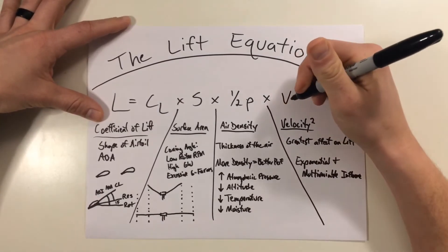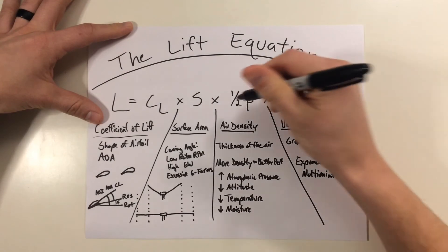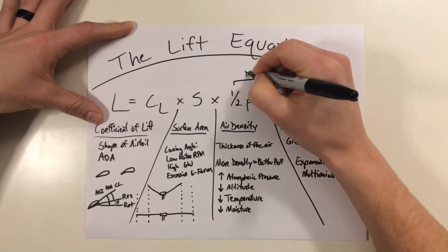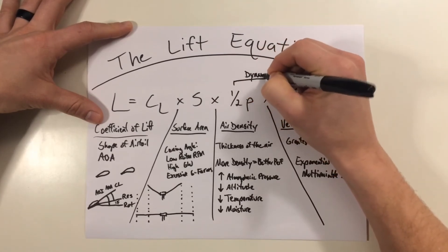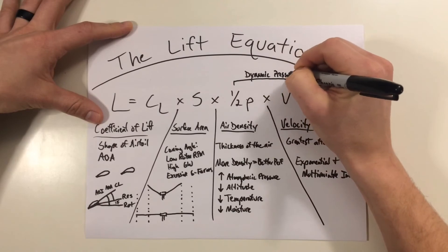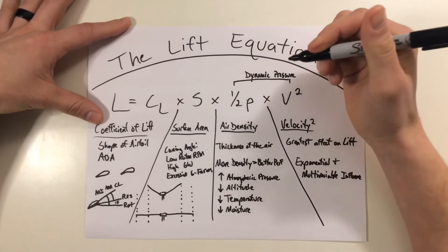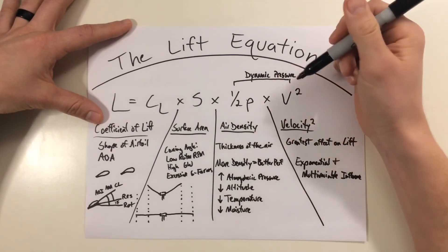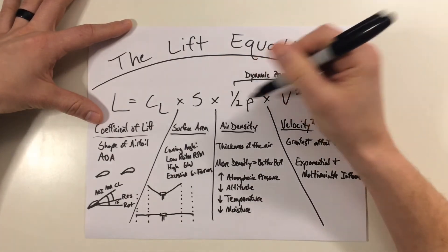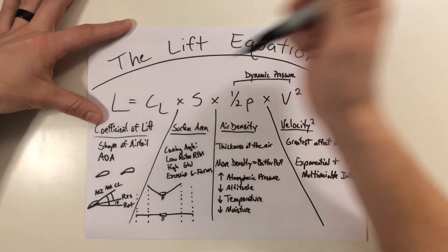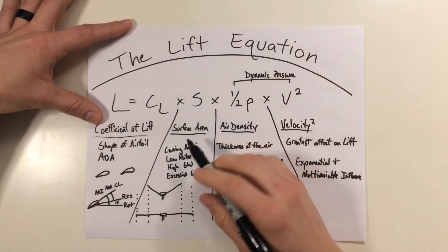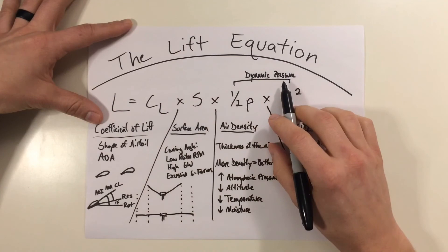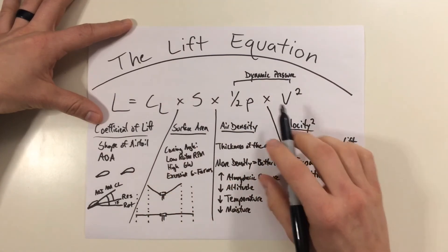Now, the last thing I want to consider is what I talked about earlier with the one-half ρ times the velocity squared. You might have seen this formula before and this is going to be the formula actually for dynamic pressure. Now, dynamic pressure, if you remember from other lessons and textbooks, this is going to be used by your pitot tubes to measure airspeed. This is why it's commonly used together in the lift equation because usually some textbooks will refer to this as the lift equals the coefficient of lift times surface area times dynamic pressure. But for this, we just broke it down piece by piece.